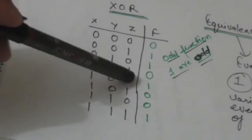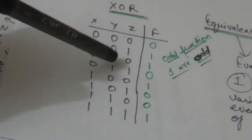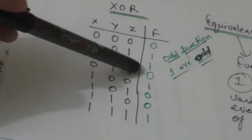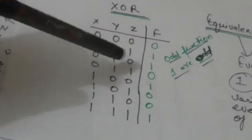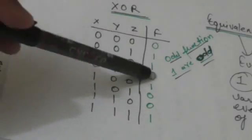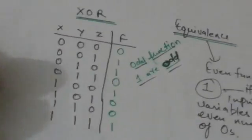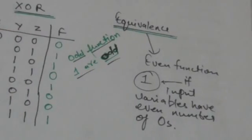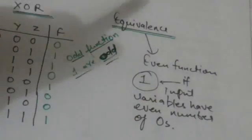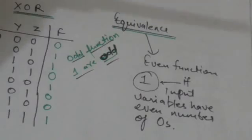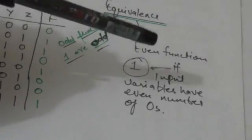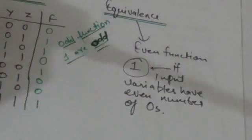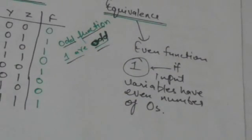When the input has two 1s — for example, 0, 1, 1 — that is an even number of ones, so the value of function F is 0. The equivalence function is the complement of XOR, making it an even function. Its value will be 1 when the input variables have an even number of zeros. Thank you very much.